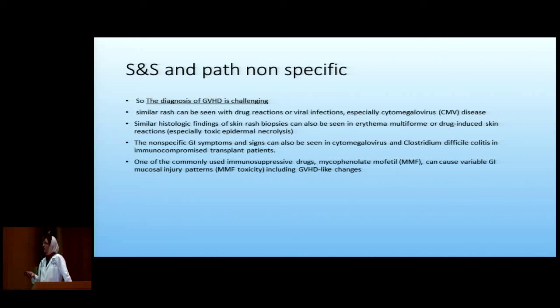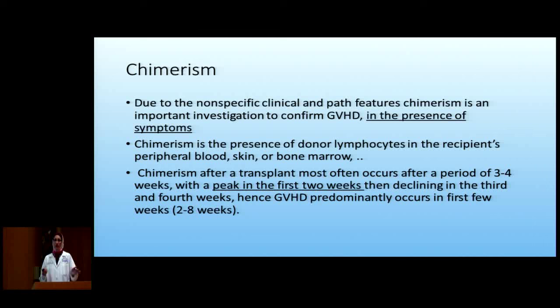This picture can be seen with a lot of other problems: viral infection can cause skin rash, CMV, and the skin biopsy can look similar to erythema multiforme or drug-induced rashes. For GI symptoms, CMV and C. diff can cause diarrhea, and MMF can cause a typical picture of crypt apoptosis. So timing is the first clue, then pathology, and then the next step is chimerism.